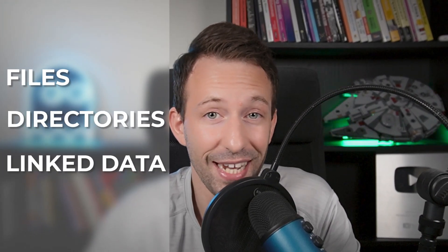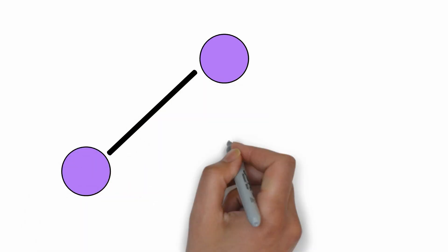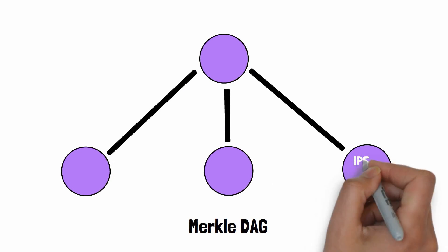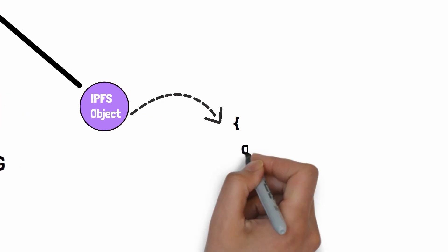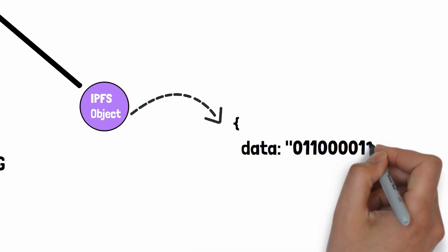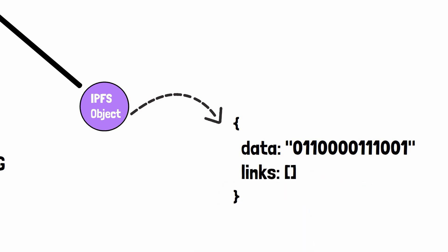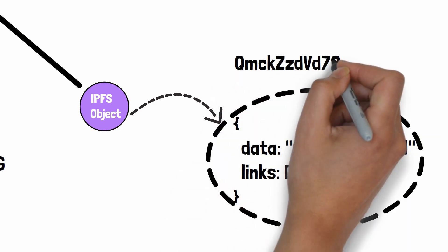IPFS is much more ambitious than just a BitTorrent alternative — it wants to be the future of the internet. IPFS wants to represent not only files but also directories or any kind of linked data. That's why data on IPFS is represented by a tree-like structure called a Merkle DAG. Each element of this data structure is an IPFS object — like a JSON file with a data field for the actual data and a links field for an optional array of related IPFS objects.